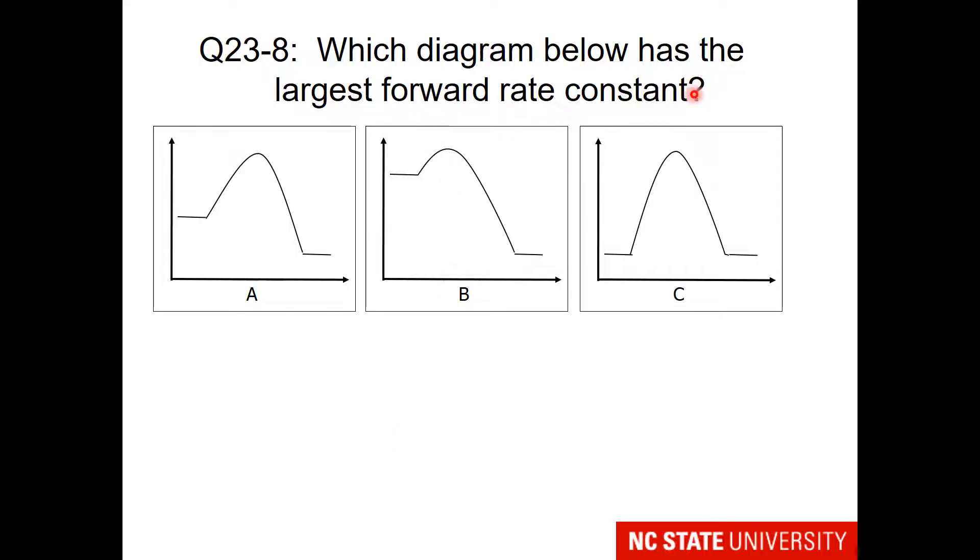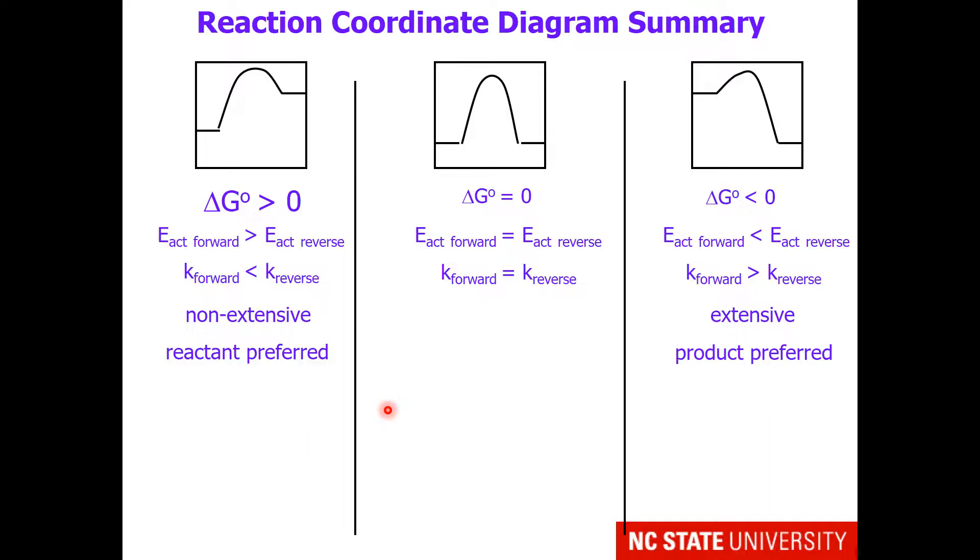That brings us to this question, which diagram below has the largest forward rate constant? To answer this, you need to think, do I need a large hill going forward or a small hill going forward in order to have the largest forward rate constant?